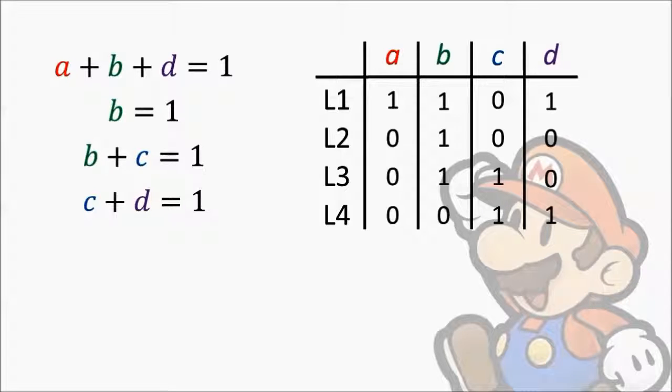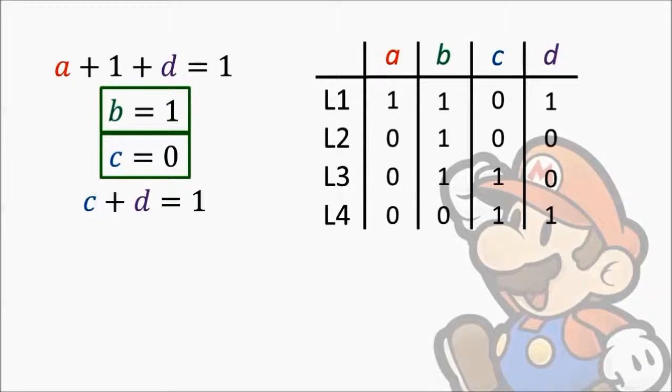Using equation 2, we can immediately see that B equals 1. We can now substitute B equals 1 into the other equations. In equation 3, we can see that C equals 0. Again, we substitute C equals 0 into the other equations. Using equation 4, we can see that D equals 1. We substitute D equals 1 into the final equation.